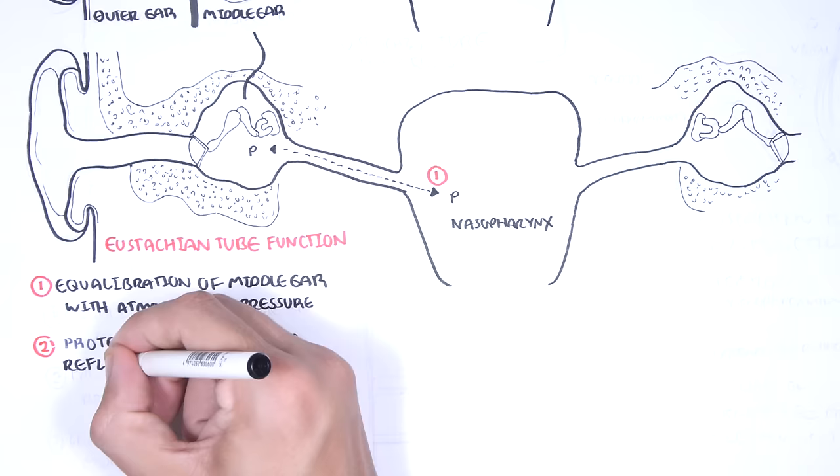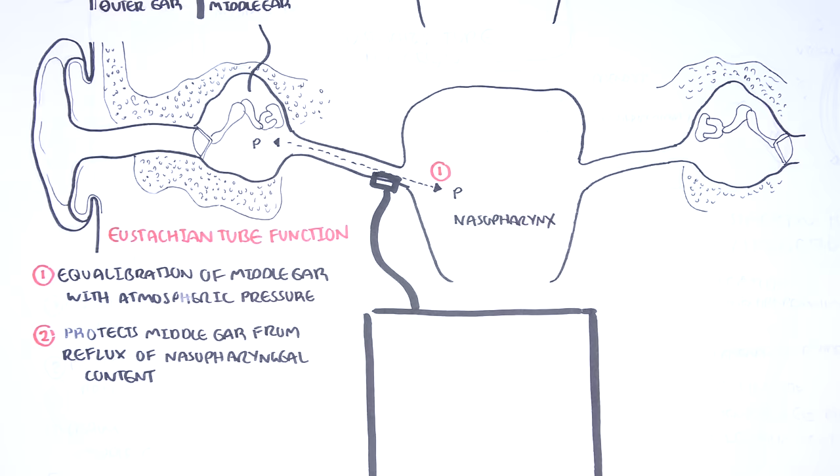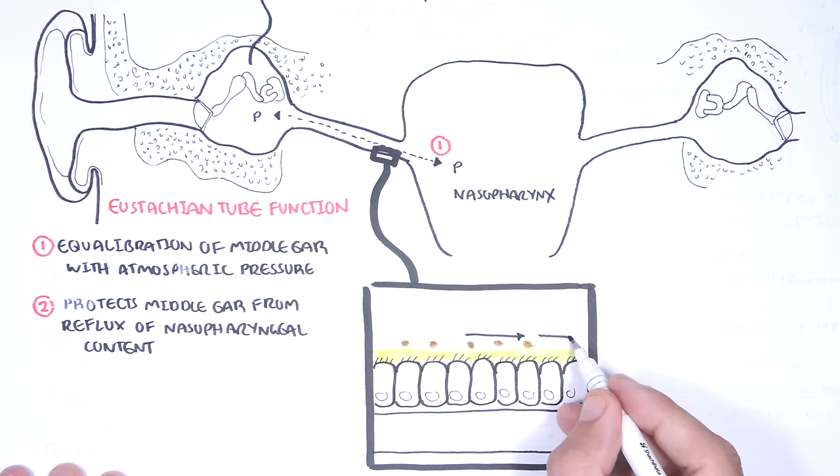It's the primary defense mechanism of the middle ear. It protects the middle ear from reflux of nasopharyngeal secretions through the use of cilia, propelling unwanted substances to the nasopharynx.